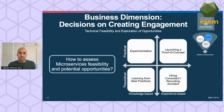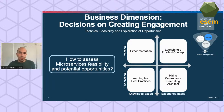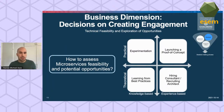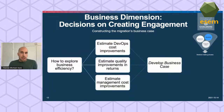Starting with the business dimension, an interesting finding was that engineers needed to create engagement across the organization — they needed to propagate knowledge that migration needed to take place to other key stakeholders. The first decision was usually how to assess microservices feasibility and potential opportunities. Some engineers chose more practical approaches, others more theoretical — through reading or hiring consultants.